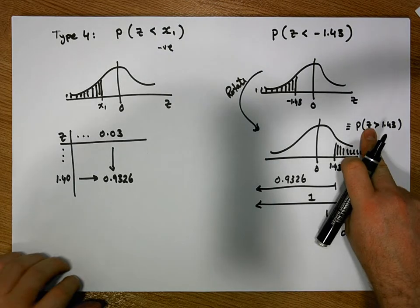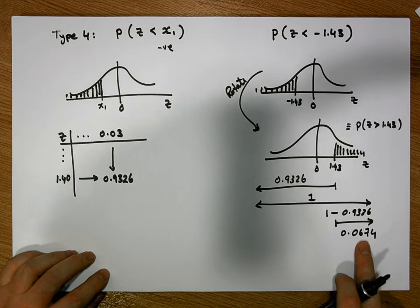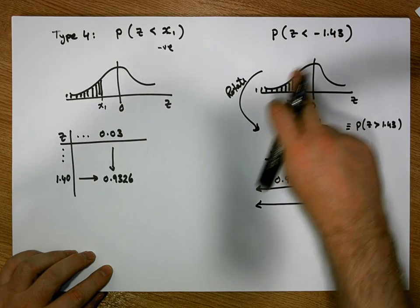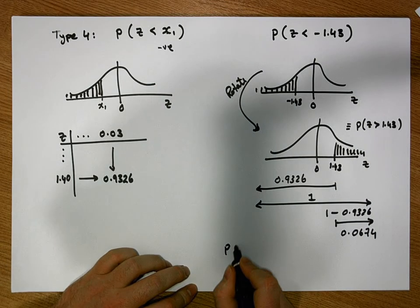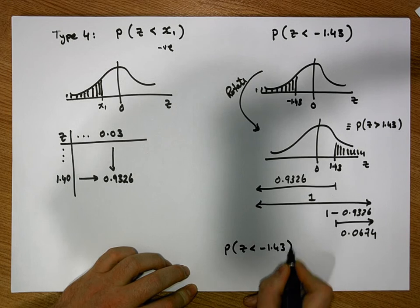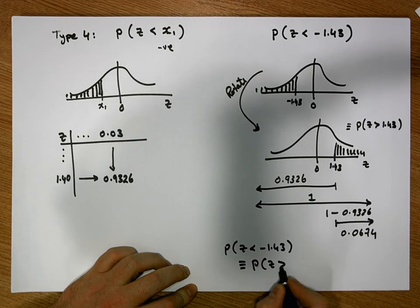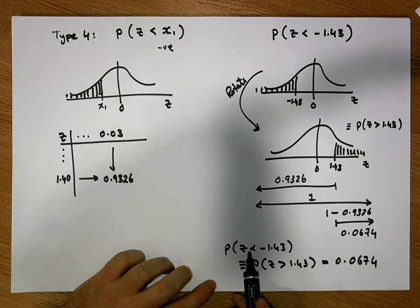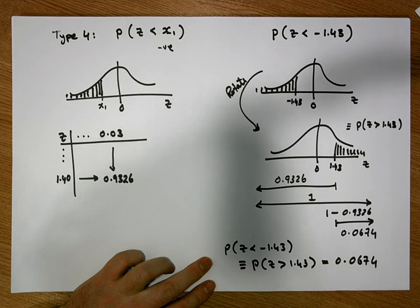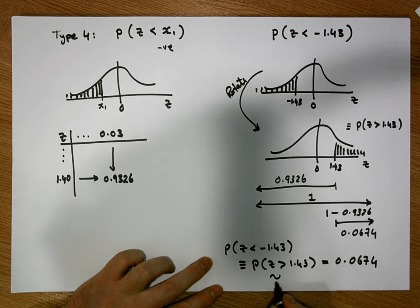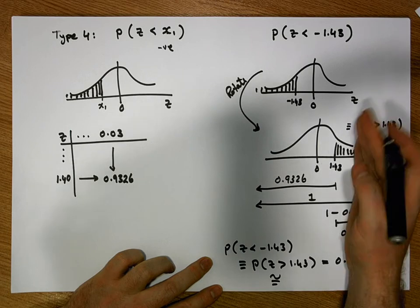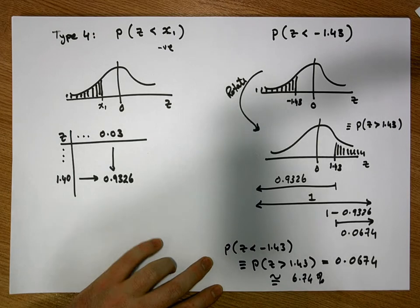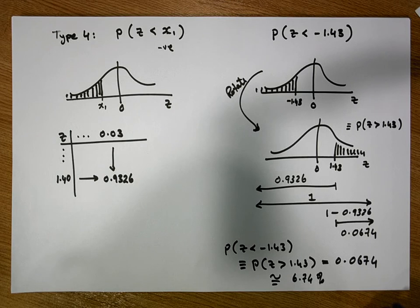The area to the right-hand side of 1.43 is 0.0674. Through symmetry, this is the same as the area to the left-hand side of minus 1.43. In other words, the probability of z being less than minus 1.43 is equivalent to the probability of z being greater than 1.43, which equals 0.0674. As a percentage, this area represents 6.74% of the area under the curve.